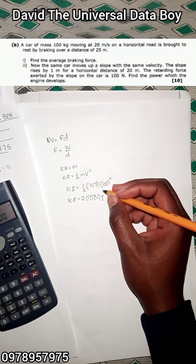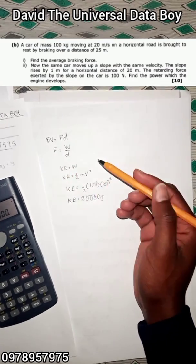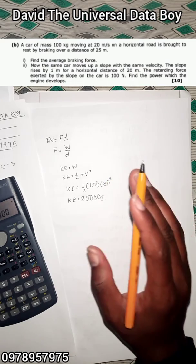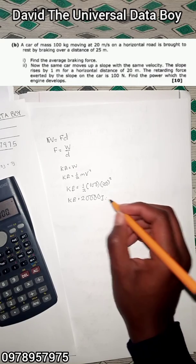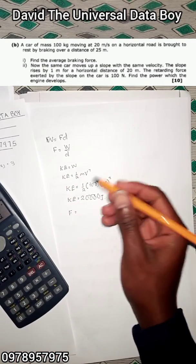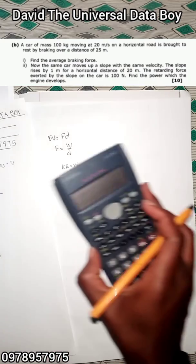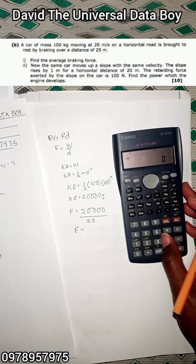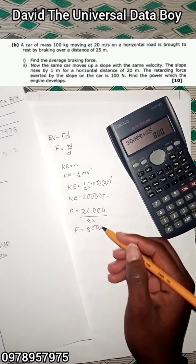This is the kinetic energy the car possesses. To stop the car, you need to apply a force that produces work to counteract this kinetic energy. If the work is less, the car won't stop. So the force equals the work divided by the distance: 20,000 joules divided by 25 meters, giving us a force of 800 Newtons.